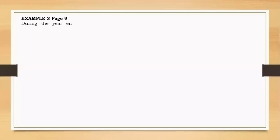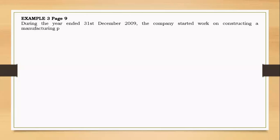Hello everyone, welcome again to High BG Accounts. We're going to take a look at another example on borrowing costs related to general borrowing. In the previous example we took a look at specific borrowing, and now we're on general borrowing. During the year ended 31 December 2009, the company started work on constructing a manufacturing plant and incurred expenditure as follows.